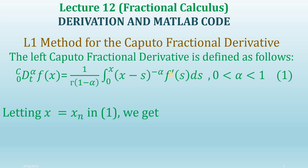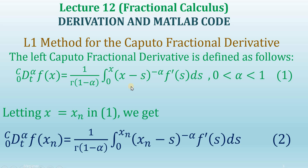Now we will replace x by x_n in equation 1 and obtain equation 2. In equation 2 the integral has lower limit 0 and upper limit x_n. I am going to break this integral into several other integrals using the subintervals of the interval 0 to x_n.